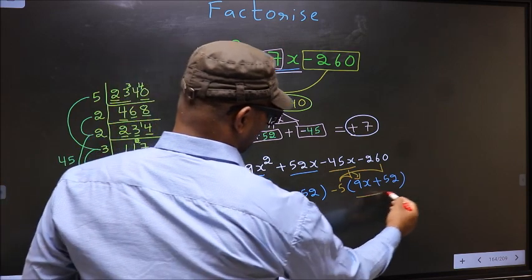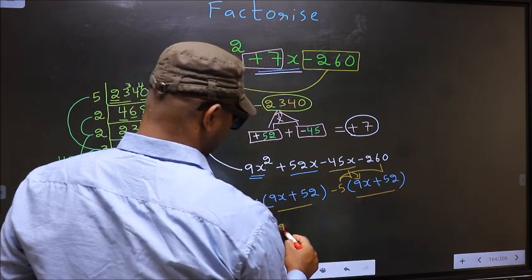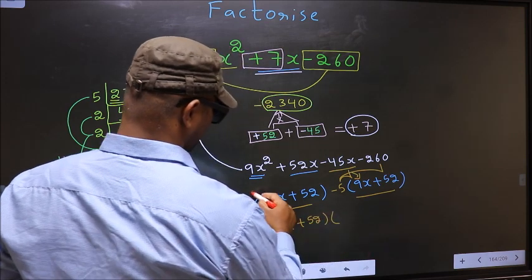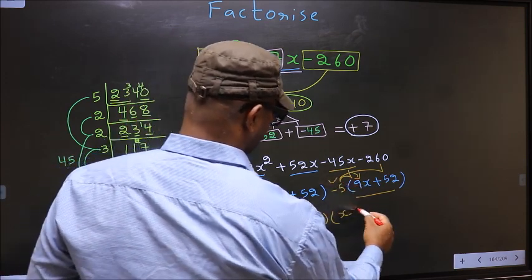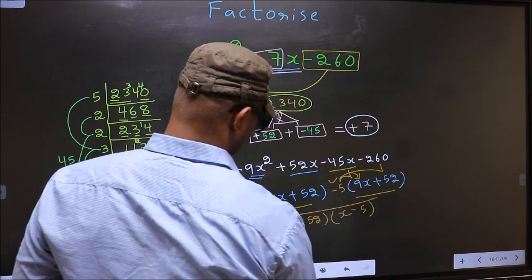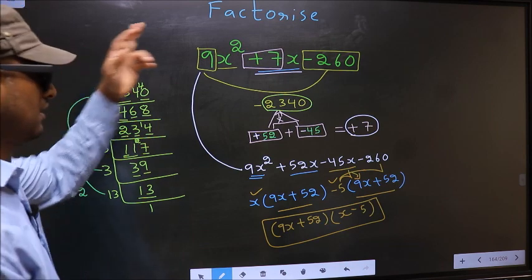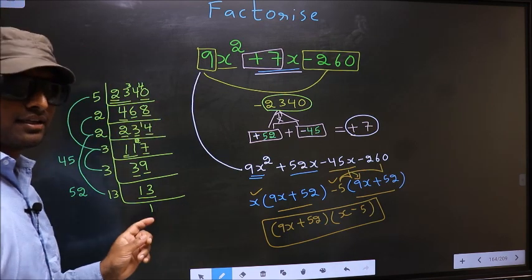Now you take out 9x plus 52 common. So here you have x and here minus 5. This is our answer. Am I clear?